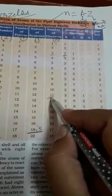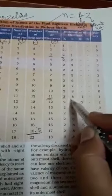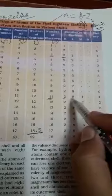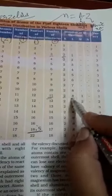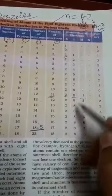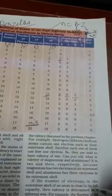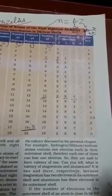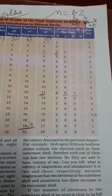11 means 11 electrons. 2 filled in K, 8 in L. How much total? 10. One is left. That one will go to M shell. This is the way to calculate electronic distribution of the various electrons.